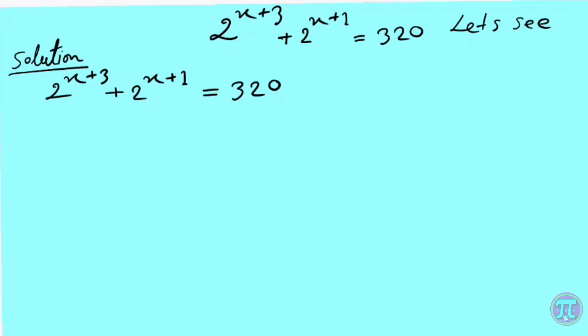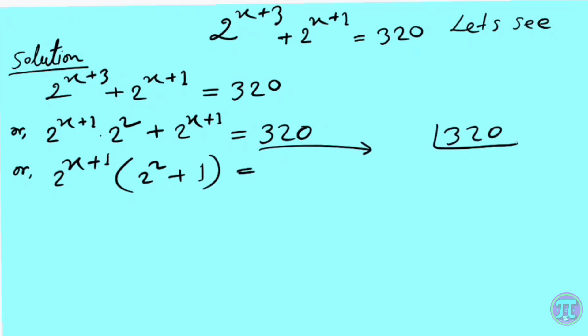2^(x+3) + 2^(x+1) = 320. Now, 2^(x+1) × 2^2 + 2^(x+1). Taking the common factor 2^(x+1), we get 2^(x+1)(2^2 + 1) =